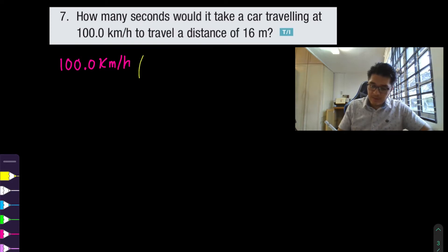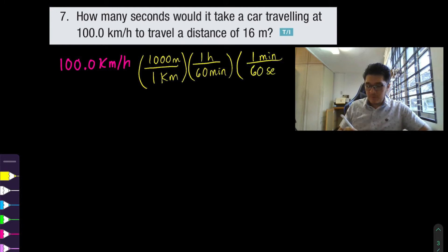So to cancel out the units of kilometers so in one kilometer there's a thousand meters then to cancel out the unit of hour in one hour there's 60 minutes then to cancel out the minutes in one minute there's 60 seconds.